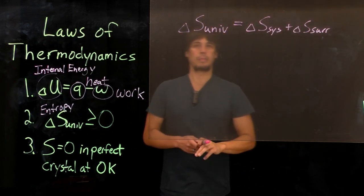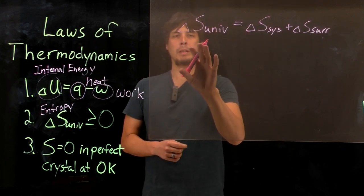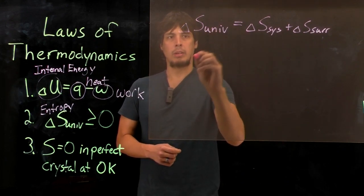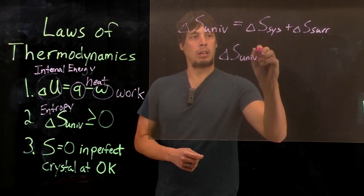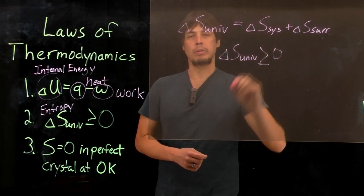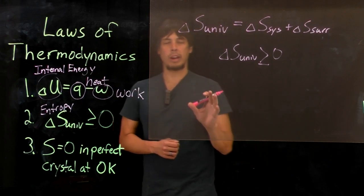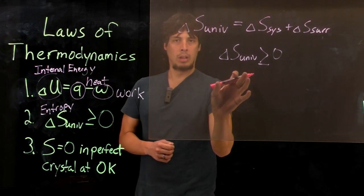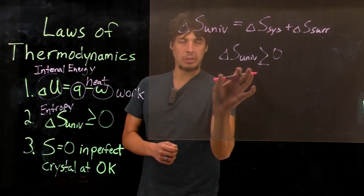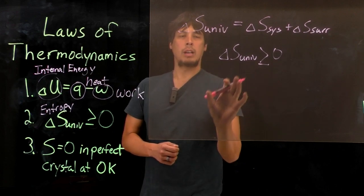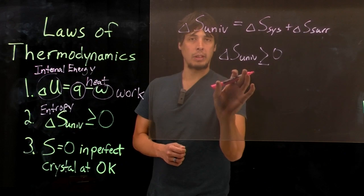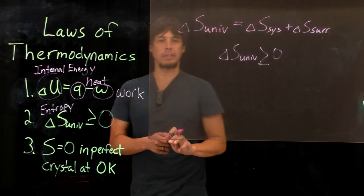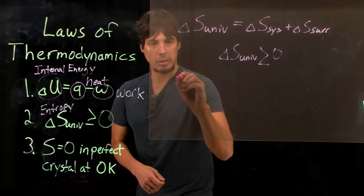And so, basically, if we're looking at any chemical process, by the equation S universe is greater than zero, we can predict if this reaction is possible, if we know how it affects the entropy of the universe. However, calculating or observing the entropy in the entire universe is very difficult. So instead, we use this equation,